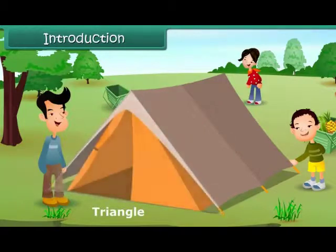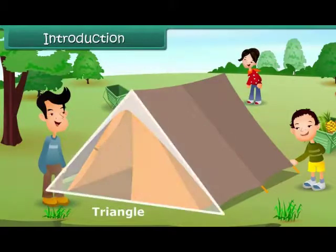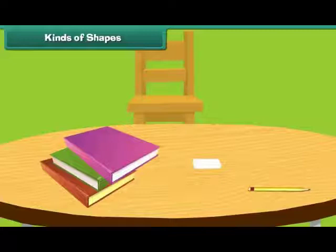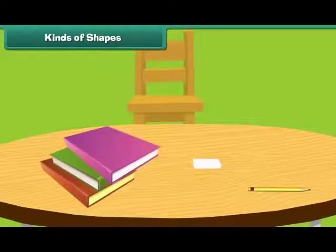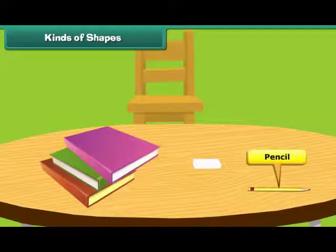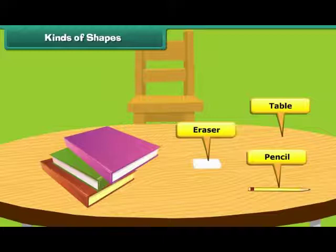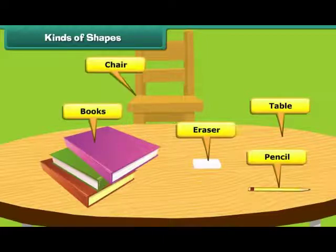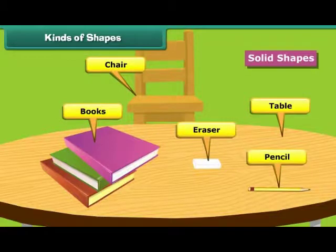In this lesson, you will learn about plain and solid shapes, kinds of shapes. We see different shapes all around us. Pencils, erasers, tables, books, chairs, etc. They are called solid shapes.